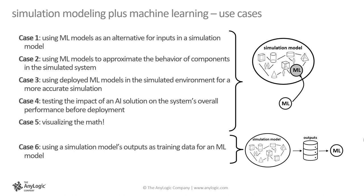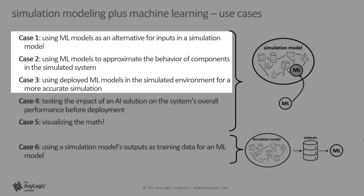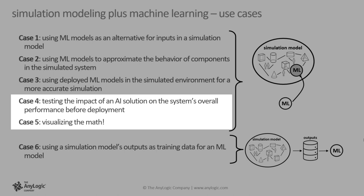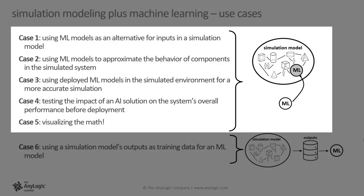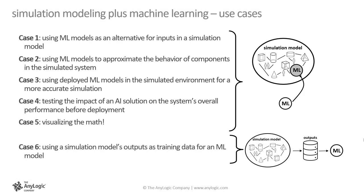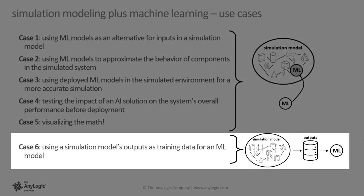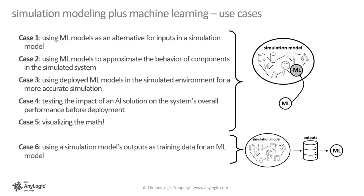To clarify some of the synergies and benefits from combining simulation modeling and machine learning, I'm going to discuss six use cases, three from the perspective of simulation modelers, two from the perspective of data scientists, and one from both. Keep in mind that the first five cases are fundamentally the same. In all of them, we are incorporating a trained ML model into a simulation. Depending on the specific use case and your own viewpoint, you might see some of these as being separate. Case six is different from the rest as it does not incorporate the ML model into simulation. Instead, output from a simulation model is used as training data for an ML model.